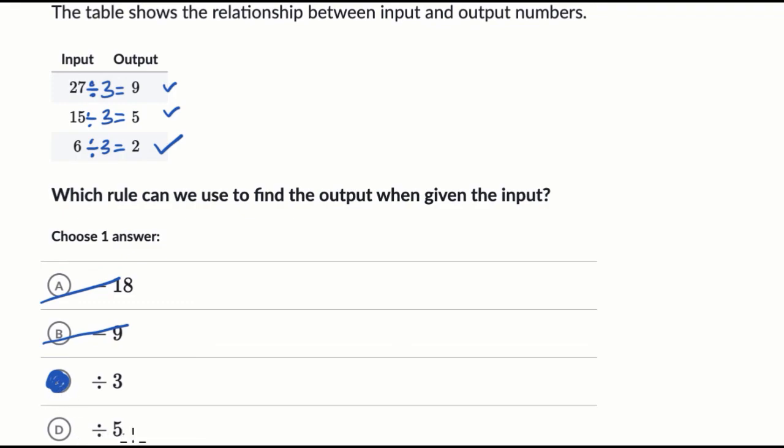Five, this last one's not going to work, but we can verify that. 27 divided by five is definitely not nine. 15 divided by five is definitely not five. And six divided by five is definitely not two. So that one's definitely not right.